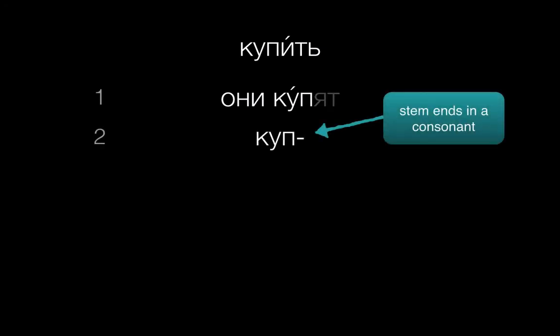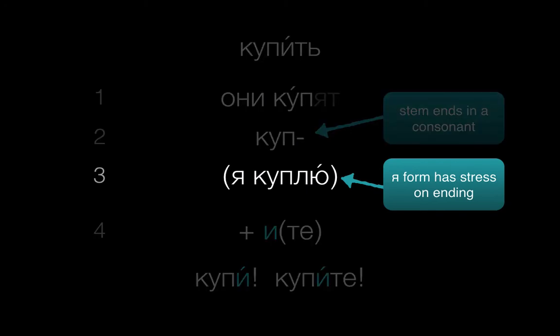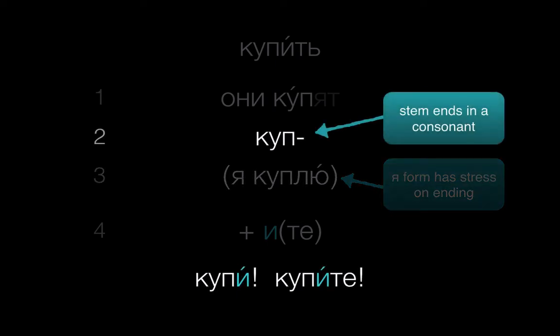And what if you want to tell someone to buy something? Let's try купить. Они купят. We'll drop the ending. The stem ends in a consonant, so we'll check the stress of the Я form — Я куплю. Stress is on the ending, so again we'll add И: купи. Notice how we have Л in the Я form, Я куплю, but that really doesn't matter since we're always going from the stem of the они form. We only need to check the stress of the Я form here.